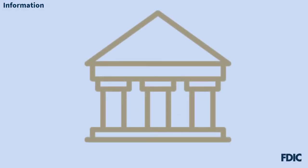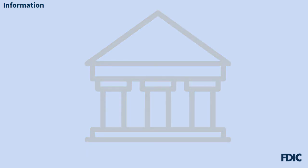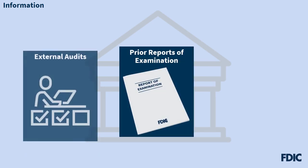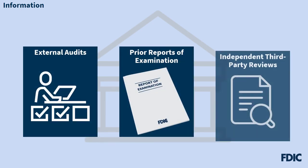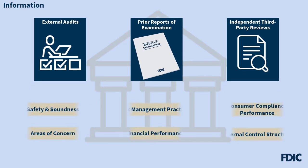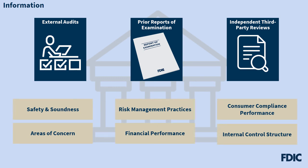We've just shared a lot of information about the responsibilities you've assumed by joining a bank's board. We recommend reviewing a few critical pieces of information as a starting point. These include prior reports of examination, external audits, and independent third-party reviews. These items provide a wealth of information about the bank, including its safety and soundness, risk management practices, consumer compliance performance, areas of concern, financial performance, and internal control structure.